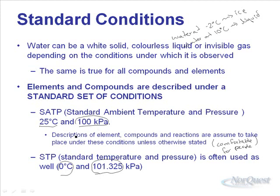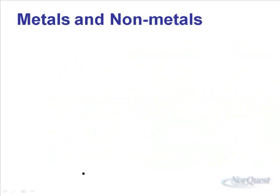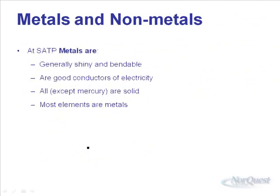If the conditions are different from either of those standards, the person describing must say so. At standard ambient temperature and pressure, all metals are shiny and bendable, good conductors of electricity, and all except mercury are solid at room temperature. Most elements are metals — over half of the periodic table is composed of elements with metal properties.